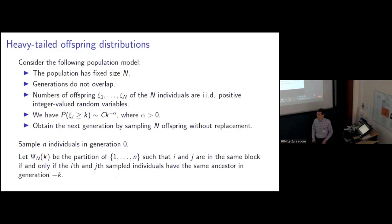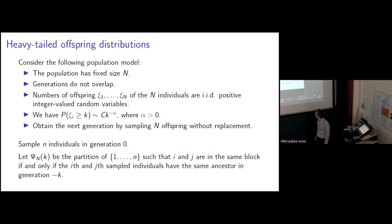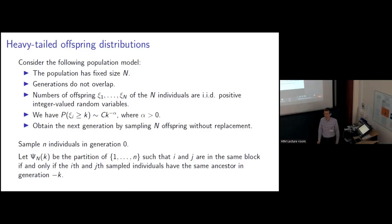I want to give one specific example where genealogies in a Cannings model converge to the lambda coalescence. We're going to consider a population model with a heavy-tailed offspring distribution. Population has fixed size N with non-overlapping generations. The numbers of offspring of the N individuals in a generation are iid random variables taking positive integers as values. We'll assume that the probability that an individual has k or more offspring is asymptotically a constant times k to the minus alpha, where alpha is positive. We then obtain the next generation by sampling capital N of these offspring without replacement, which keeps the population size fixed.